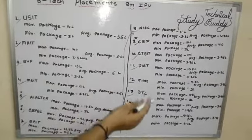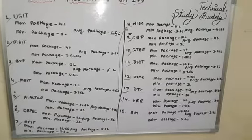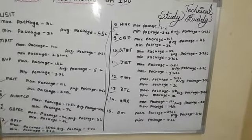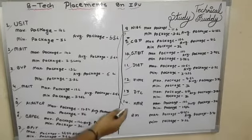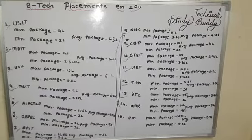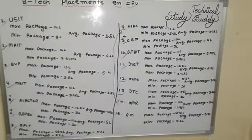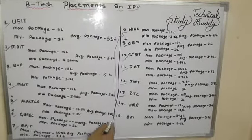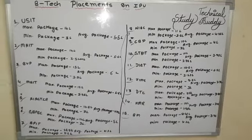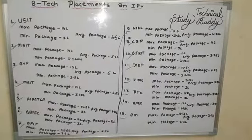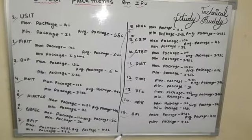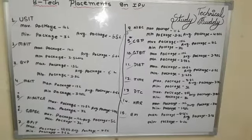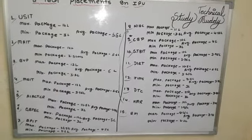In the other colleges, like HMR, there are children from MIAC and other colleges. In HMR — which is on the side of Sonipat — the maximum package is 9.25 lakhs, the average package is 3.75 lakhs, and the minimum package is 2.5 lakhs.